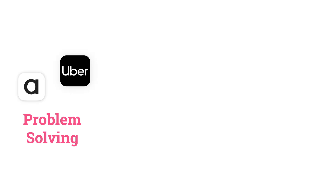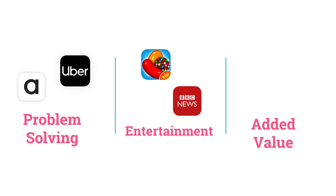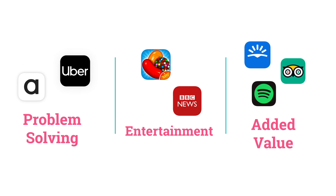Well-defined and successfully scalable apps generally fall into one of three broad categories. First, Problem Solving Apps that make product researching and purchasing more efficient — think ASOS or Uber. Second, Entertainment apps that provide content like games, videos and articles — think Candy Crush or the BBC News app. Third, Added Value apps that give you an added service such as music streaming, price comparison or product reviews — think Skyscanner, TripAdvisor or Spotify.